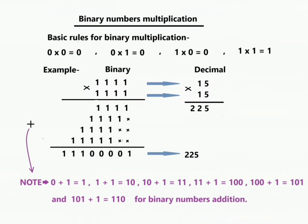Hello, binary number multiplication. Here one example is given: binary number 1111 multiplied by 111. Here are some basic rules for binary multiplication: 0 multiplied by 0 equals 0, 0 multiplied by 1 equals 0, and 1 multiplied by 1 equals 1.